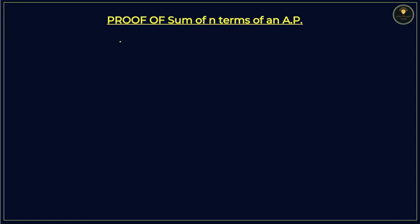We will understand how to prove that the sum of n terms of an AP. The formula is given as Sn is equal to n by 2 multiplied by 2a plus n minus 1 times d.